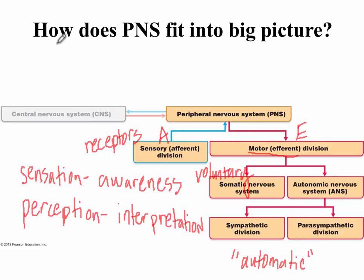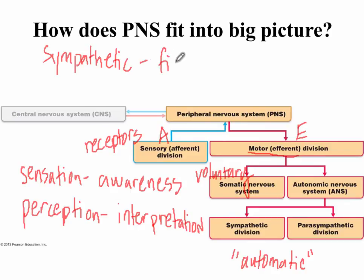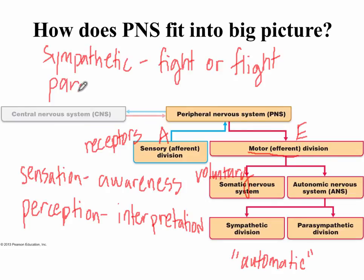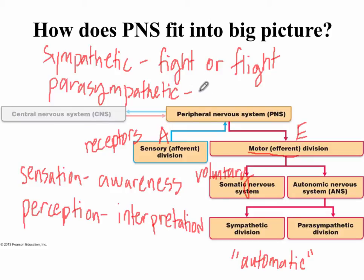There are two divisions of the autonomic nervous system. There's the sympathetic division — fight or flight — which we'll discuss in more detail in Chapter 14. And the parasympathetic division is the opposite: rest and digest. The really interesting thing is that both divisions work simultaneously on an organ.